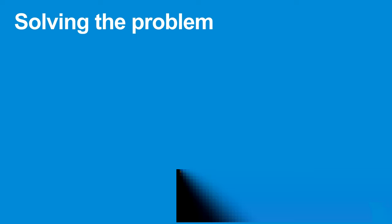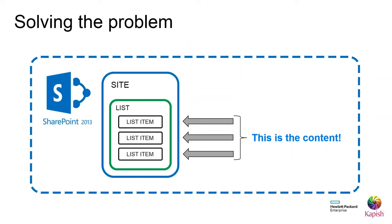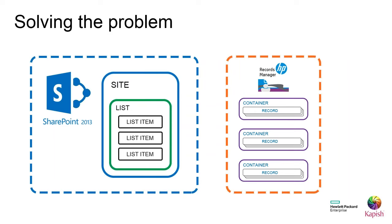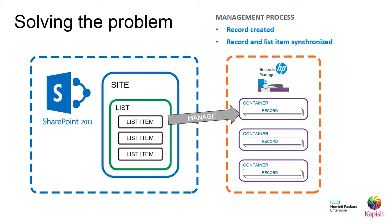Now that we understand the problem, let's talk about how we solve it — starting with how we manage content. At the core of how the integration works: a record is created in Records Manager to represent the list item, then the two are kept in synchronization. If the list item is modified, the record is updated; if the record is updated, the list item is updated as well. Once the list item is managed, the HPRM record is the authority. So when we manage the list item, the record is created and the two are kept in sync.